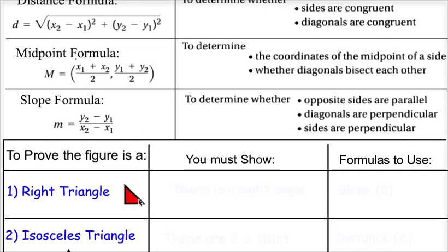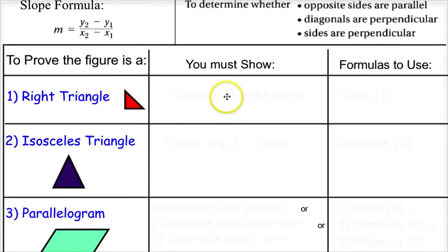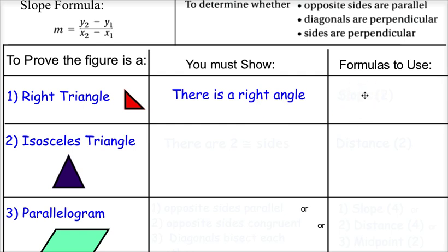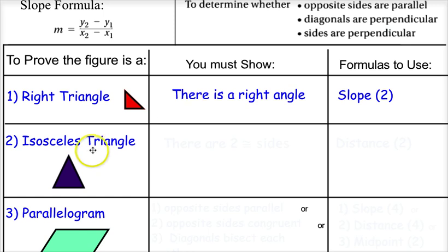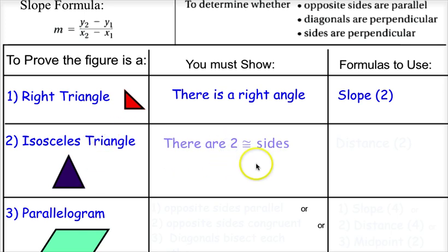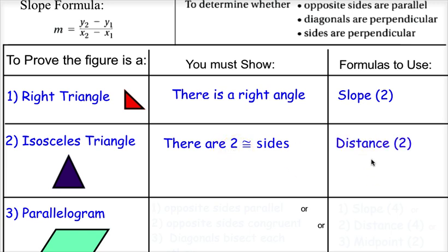To show something is a right triangle, you need to show there's a right angle. Think about which formula shows a right angle — distance, midpoint, or slope. You'd use the slope formula twice to show that two slopes are negative reciprocals, and therefore there's a right angle. For an isosceles triangle, which has two congruent sides, you'd use the distance formula twice to show that two sides are the same length.